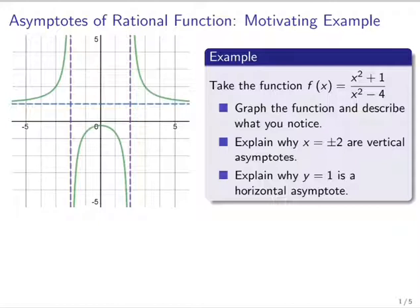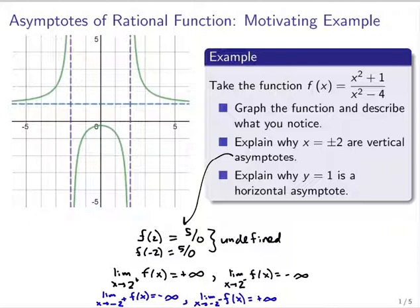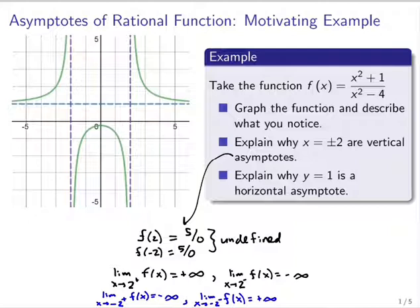x being plus and minus two — those are both vertical asymptotes. Those are places where the function is undefined. If I were to plug in two or negative two for x in the function, I would get five divided by zero in the denominator. That's what makes the function undefined at those two points, but that alone is not enough to say that there's a vertical asymptote. It could just be a hole in the function, so it's really these limits that tell me why they are asymptotes.